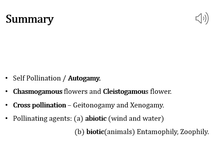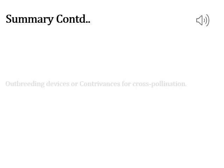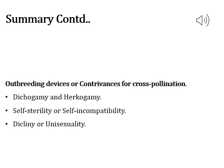In conclusion for today's session: we discussed self-pollination including autogamy, the types of flowers — chasmogamous and cleistogamous — and cross-pollination including geitonogamy and xenogamy. We also covered pollinating agents — abiotic and biotic — dichogamy, herkogamy, self-sterility or self-incompatibility, and unisexuality or dicliny. Thanks for your patience and have a good day.